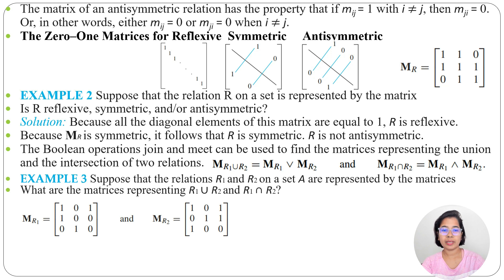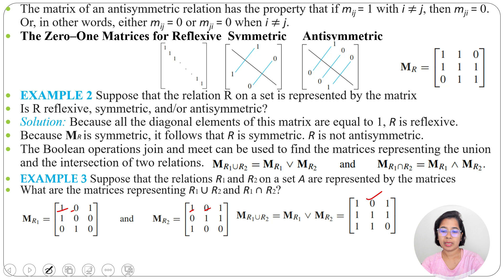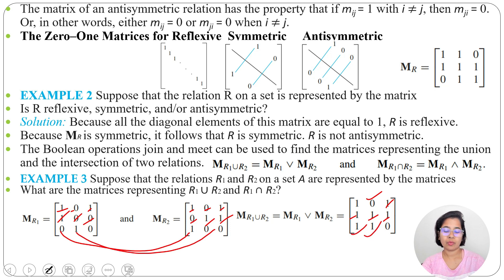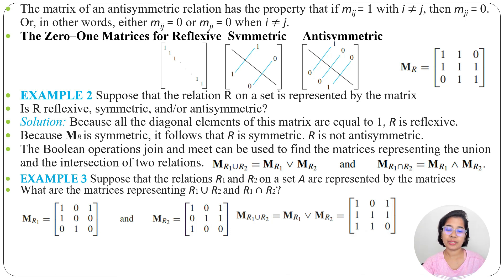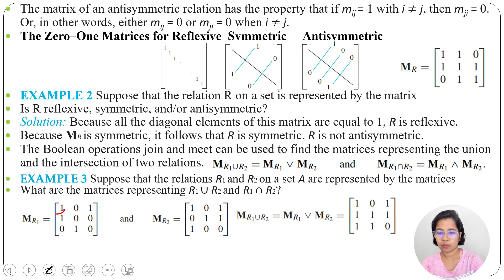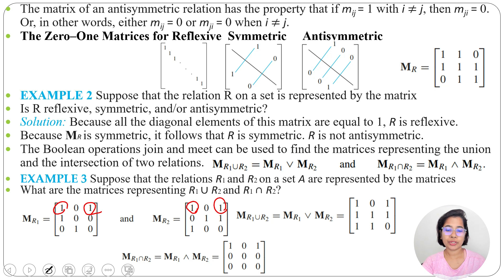For union: 0 OR 0 = 0; otherwise it will be 1. So if any entry is 1, the union is 1. Working through: 1∪1=1, 0∪0=0, 1∪1=1, 1∪0=1, 0∪1=1, 0∪1=1, 1∪0=1, 0∪0=0. For intersection: 1∩1=1; everything else is 0 — meaning 1∩0=0, 0∩1=0, 0∩0=0. Only when both are 1 will the result be 1. Working through the matrices accordingly gives the intersection result.